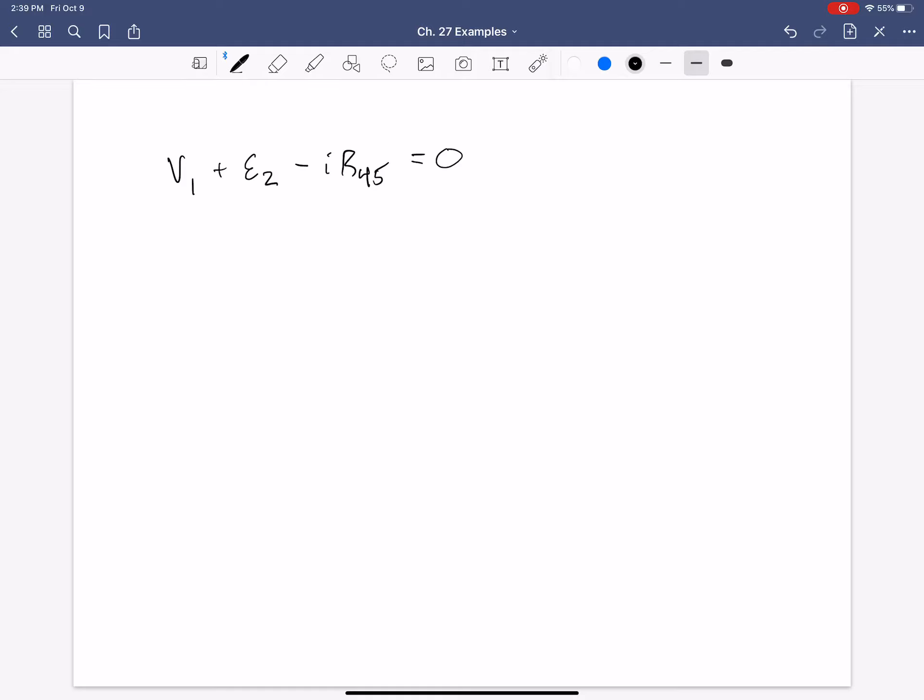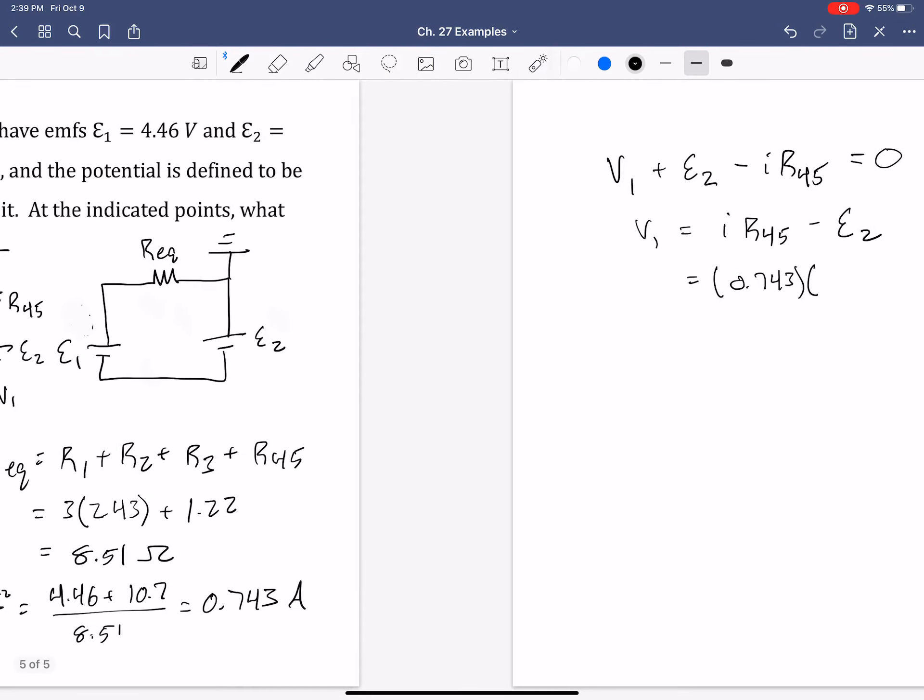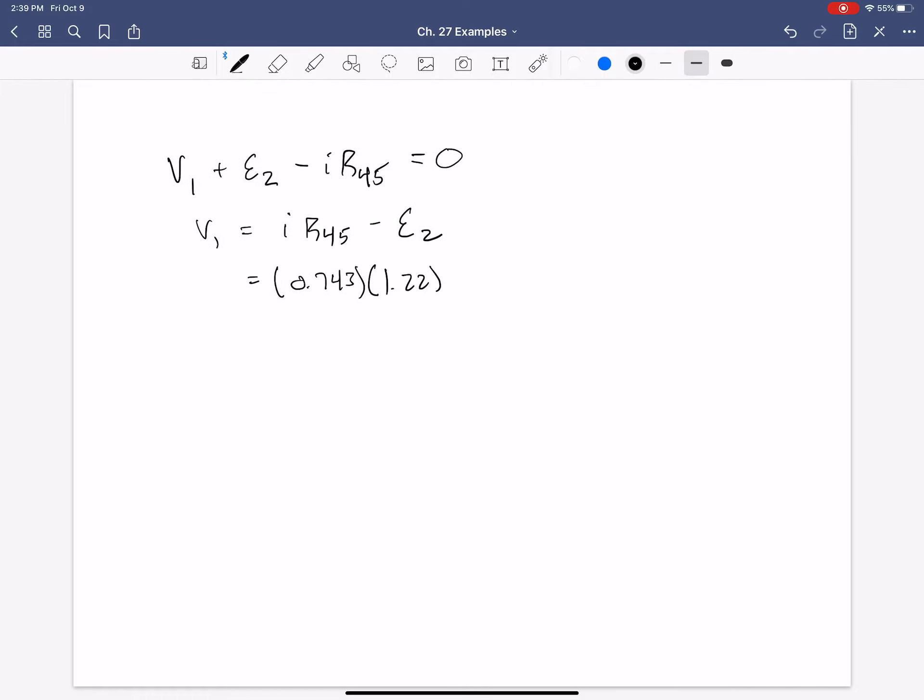And so we know the value for E2, we know the value for I, and R45, so we can simply solve this for V1. So this should be, our current was 0.743 amps, times the R45, that was 1.22, minus E2, which was 10.7 volts,